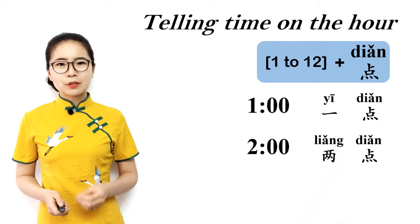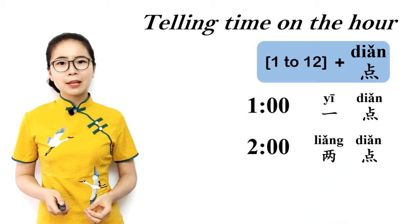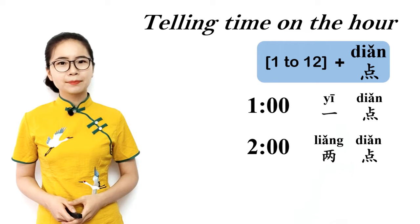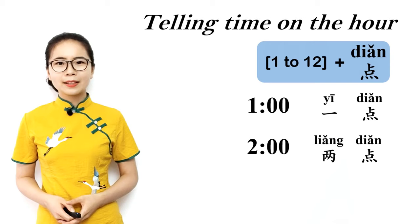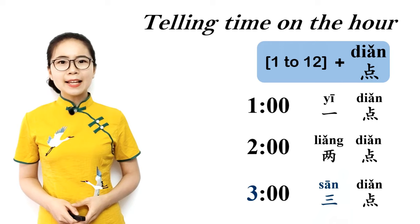We'll talk about measure words more in another lesson. For now, you just need to remember that when telling time, if it's 2 o'clock, you should say 两点 instead of 二点. Please repeat after me: 两点, 两点, 两点. Two o'clock. Three o'clock is 三点 — it's the number 3, 三 plus 点, 三点, 三点.